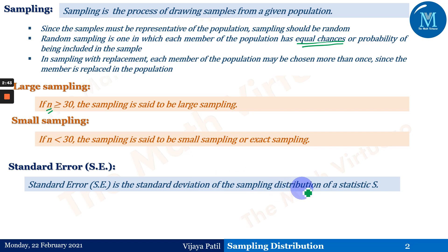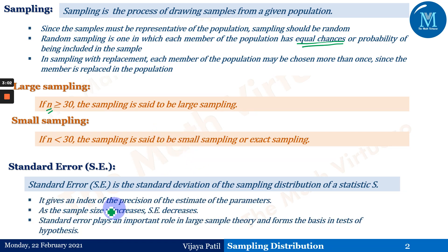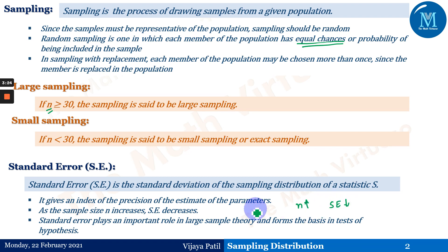Standard error is the standard deviation of the sampling distribution of a statistic. The standard deviation of a sampling distribution is also known as standard error, abbreviated as S.E. Standard error gives an index of the precision of the estimate of the parameters. As the sample size n increases, the S.E. decreases — meaning if we want less standard error, n should be large. Standard error is inversely proportional to sample size, and it plays an important role in large sample theory, forming the basis of the test of hypothesis.